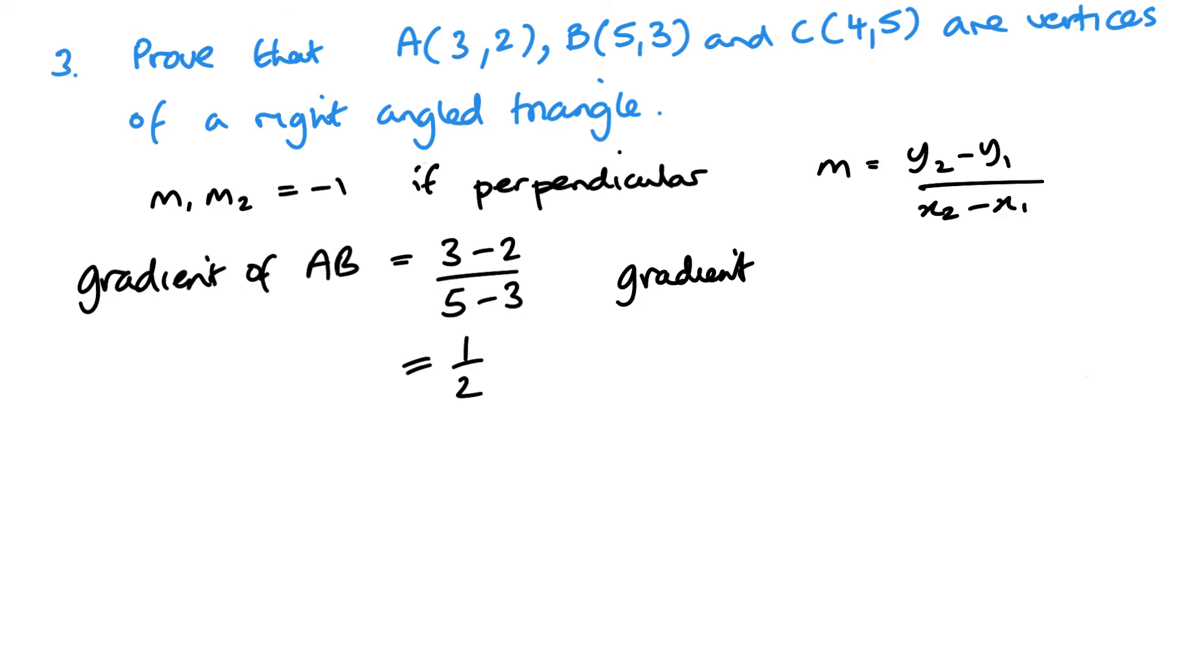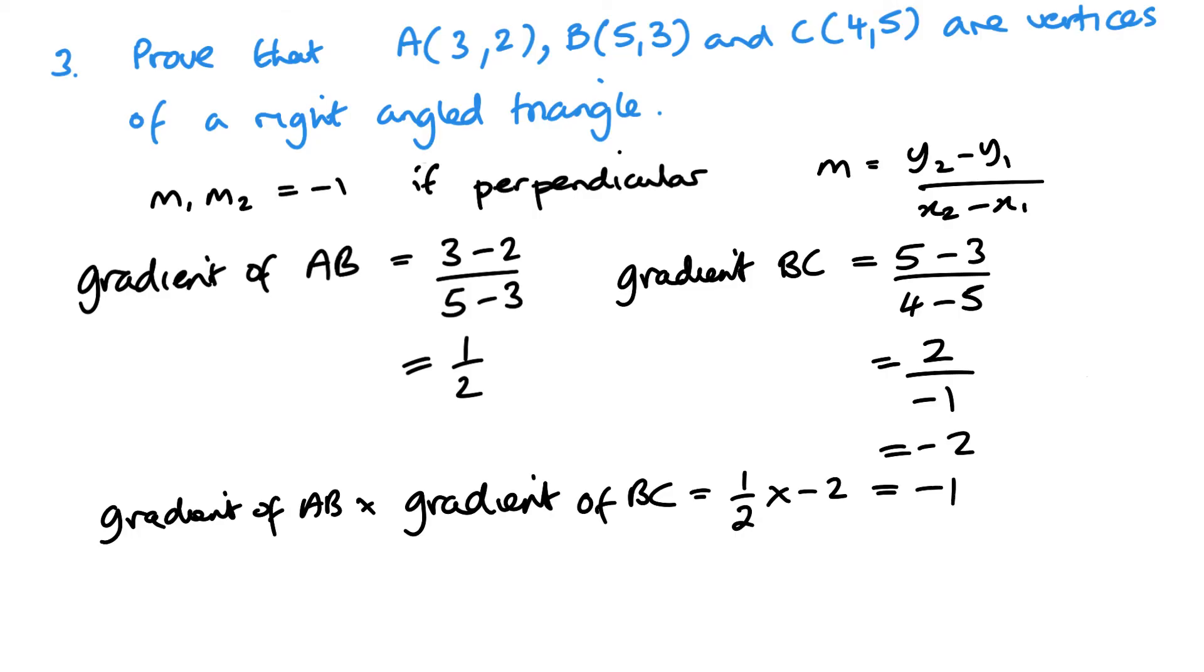Now let's look at the gradient of BC. So again, I've got 5 minus 3. I'm doing the C first here. And 4 minus 5. So on the top, I've got a gradient of 2. And on the bottom, I've got a gradient of minus 1. So that's going to give me my minus 2. Now it is quite obvious here, but you do need to finish it off. So you want your gradient of AB times your gradient of BC. So gradient of AB is a half, BC is minus 2. And when I multiply them, I get negative 1.